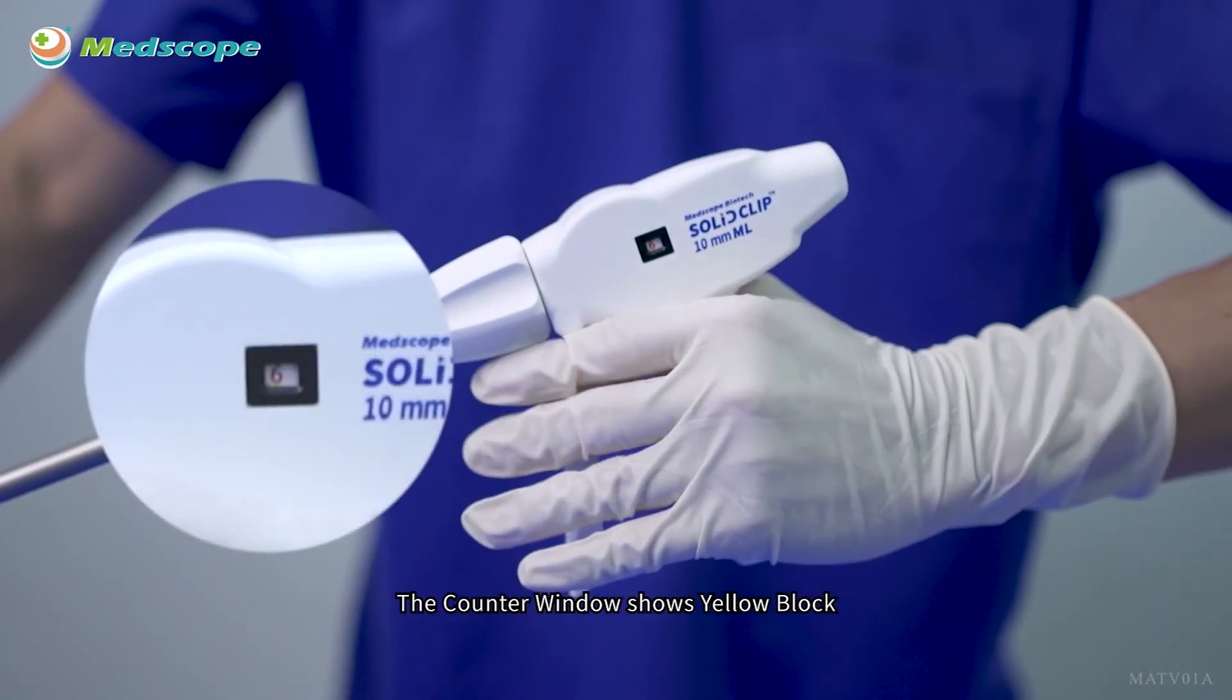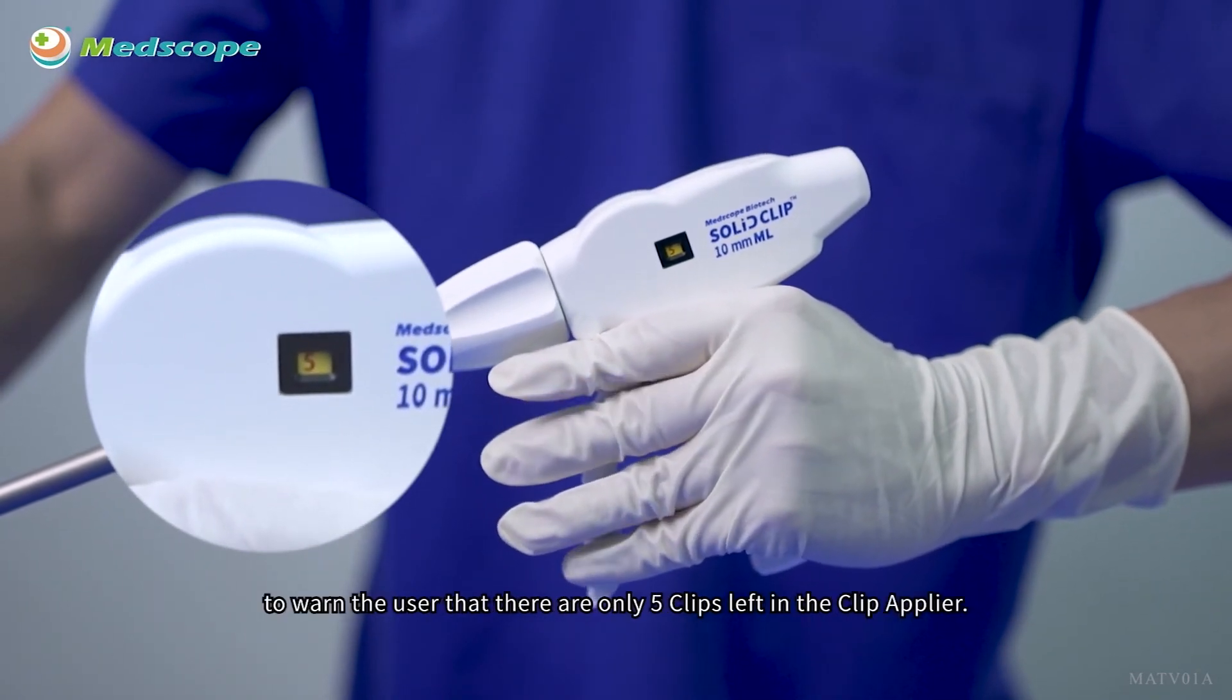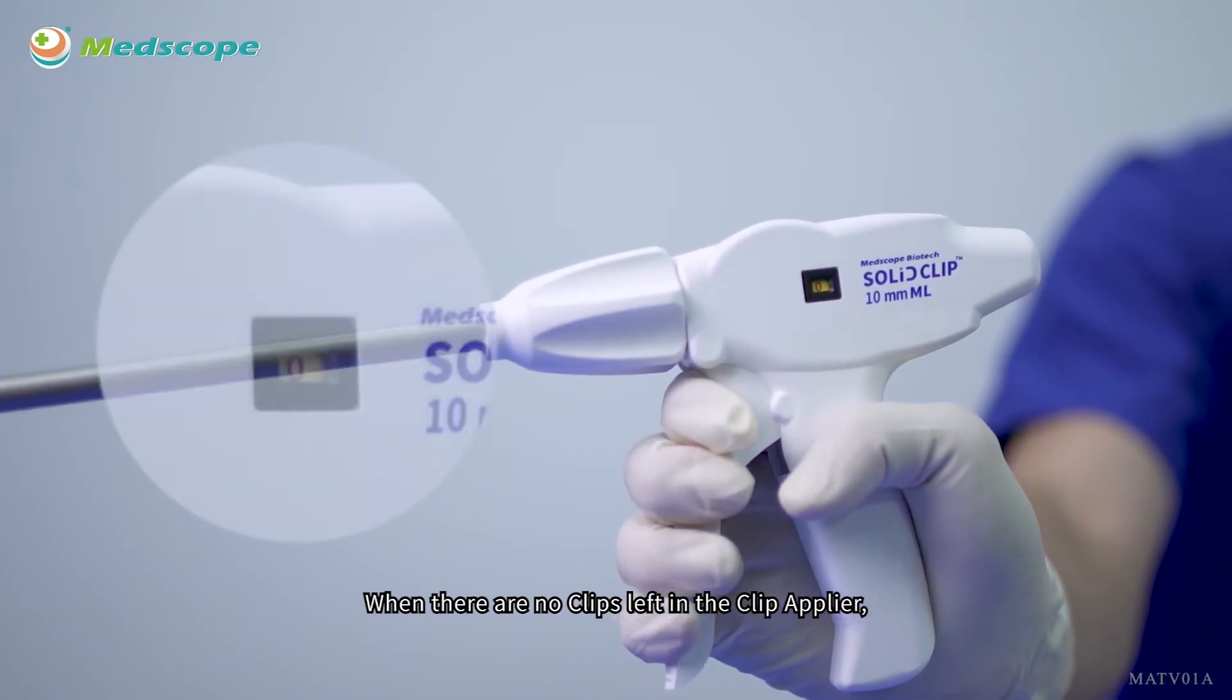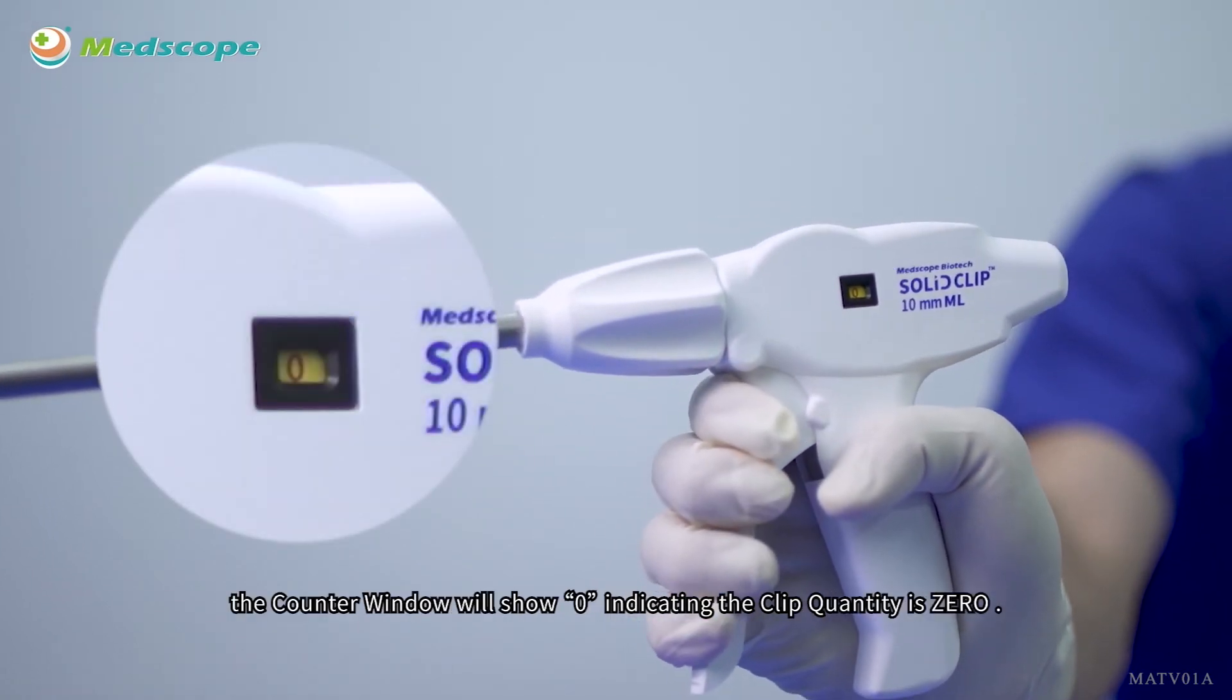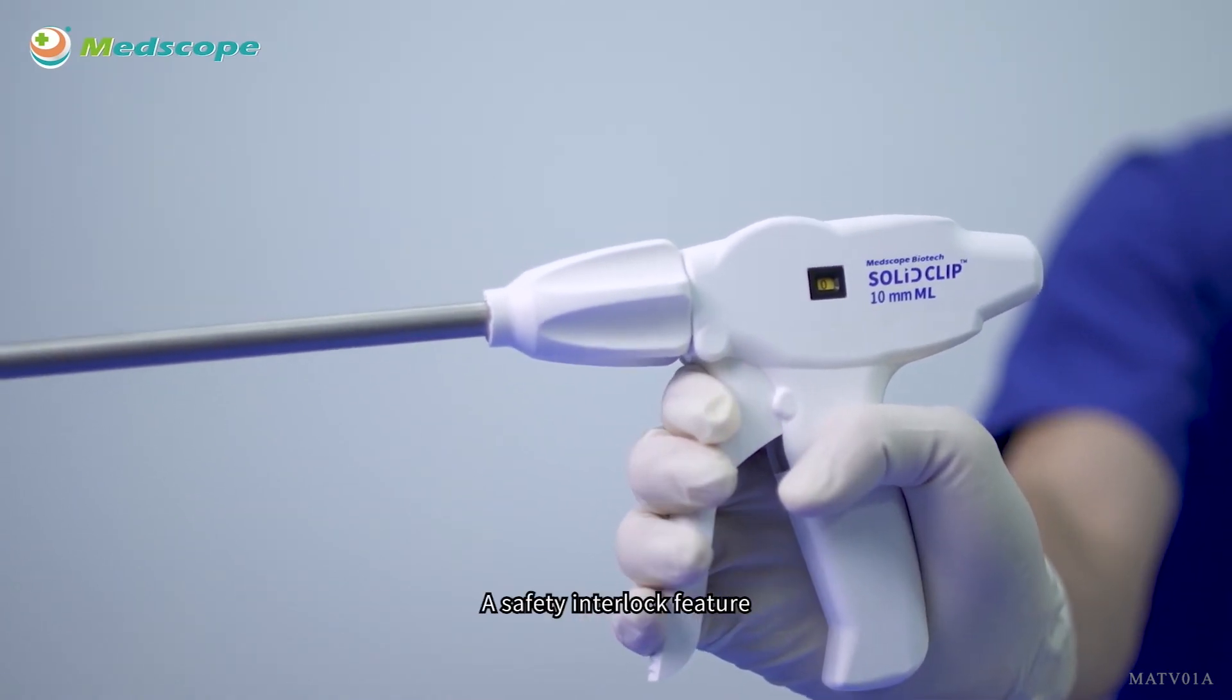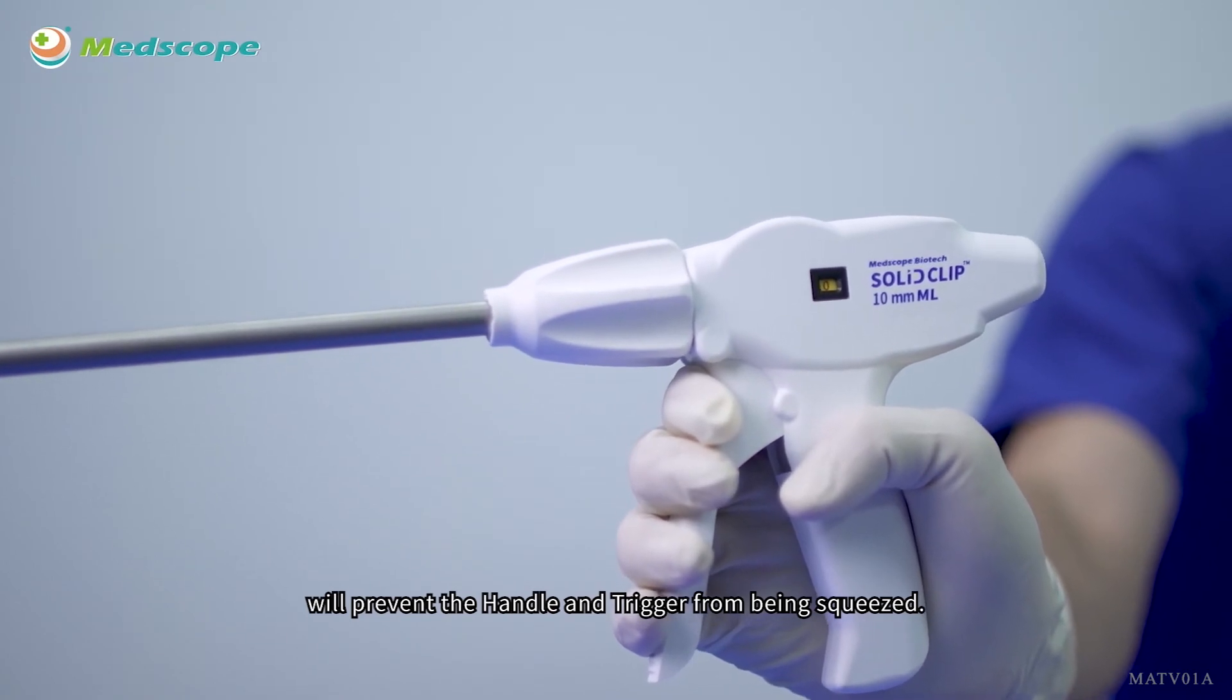The counter window shows a yellow block to warn the user that there are only five clips left in the Clip Applier. When there are no clips left, the counter window will show zero, indicating the clip quantity is zero. A safety interlock feature will prevent the handle and trigger from being squeezed.